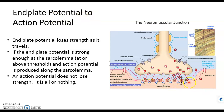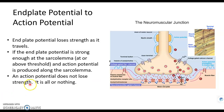If that end plate potential is strong enough to get out of the motor end plate into where it's just normal sarcolemma, then that's an action potential. And the action potential will start traveling along the plasma membrane of the muscle fiber — the sarcolemma. If an action potential does occur, it's all or nothing. That means it won't lose strength across the whole muscle fiber.